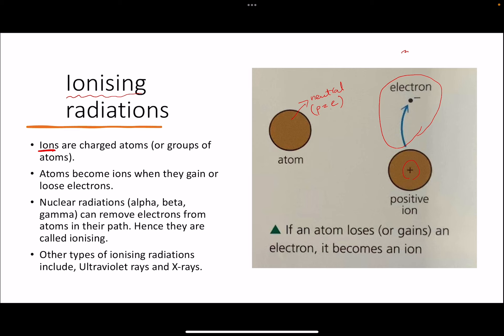So these radiations, these alpha, beta, and gamma radiations, they basically have energy and they have enough energy to actually remove electrons from the atoms that come in their path. So if alpha radiation is traveling through the air, it will come in contact with the particles of air and it will ionize them and knock the electrons out of them.